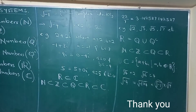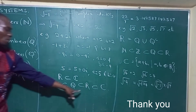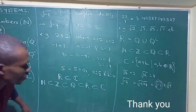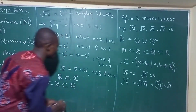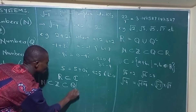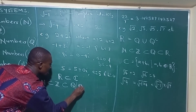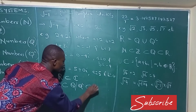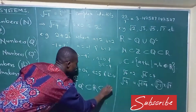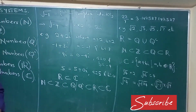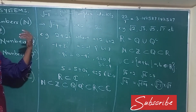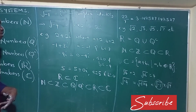Gathering everything together, you will see that N is contained in Z, Z is contained in Q, Q is contained in R, and R is contained in C. The irrational numbers and rational numbers together make up the real numbers, and those are all contained within the complex numbers. That gives us six classes of numbers that we make use of in the study of mathematics.